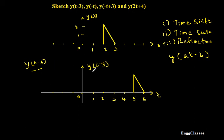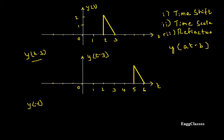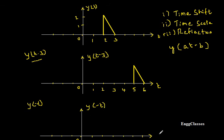The next task is y of minus t. I would call this the second signal, y of minus t. It is the reflected version of y of t. So I will sketch the reflected version. I get x-axis and y-axis, calling the y-axis as y of minus t. Whatever I have gets reflected along the vertical axis.